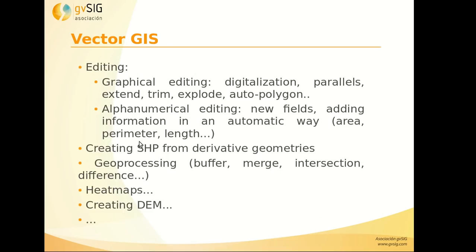For editing tools in GIS, we have different graphical editing options — we can digitize, create parallels, extend, like in CAD. But we can also edit the alphanumerical information: create new fields and add information automatically, for example the area of polygons, their perimeter, or the length of lines. We can create shapefiles from derived geometries — for example, from a point layer we can automatically create a polygon layer. We also have geoprocessing tools like buffer and intersection, and we can create digital elevation models.